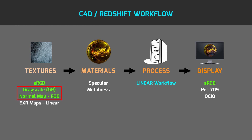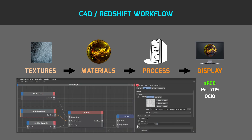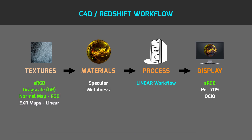That's the reason why in the Redshift texture node for grayscale and normal textures you have to enable the gamma override option. The most common format for sRGB, grayscale, or normal textures is 8-bit JPEG, but some texture artists also use PNG or TIFF formats for their texture exports.